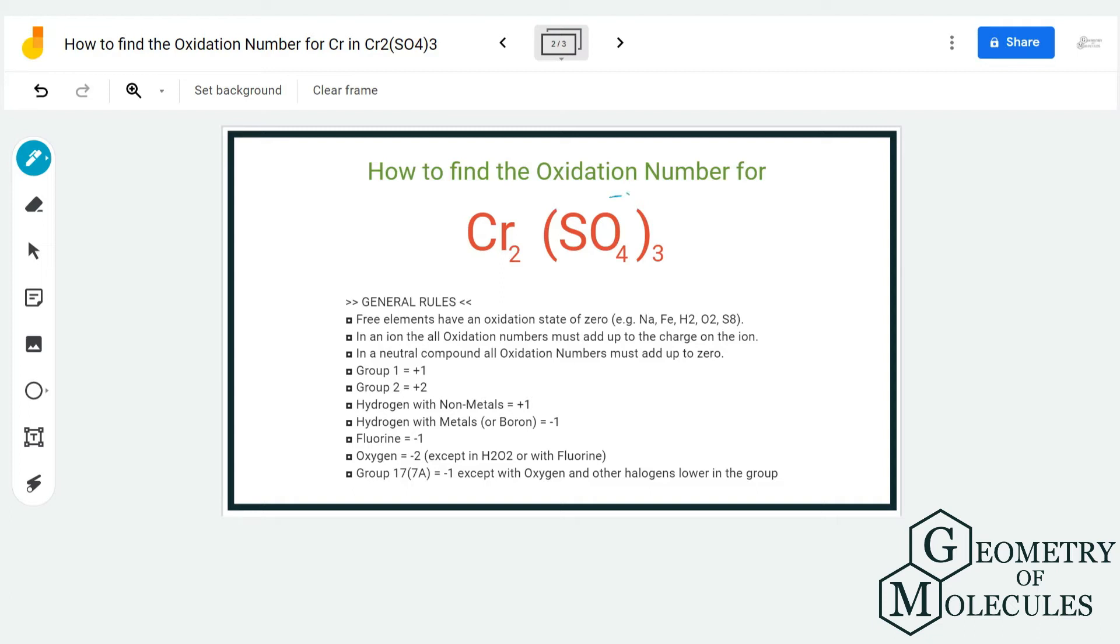But as there are 3 of them present here, we're going to multiply this number by 3. So in total, the charges on SO₄ is -6.